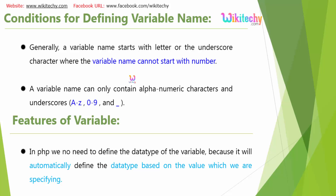Here are the conditions for defining variables. A variable name starts with a letter or an underscore character — it cannot start with a number. A variable name can only contain alphanumeric characters and underscores. This is also one of the important interview questions.